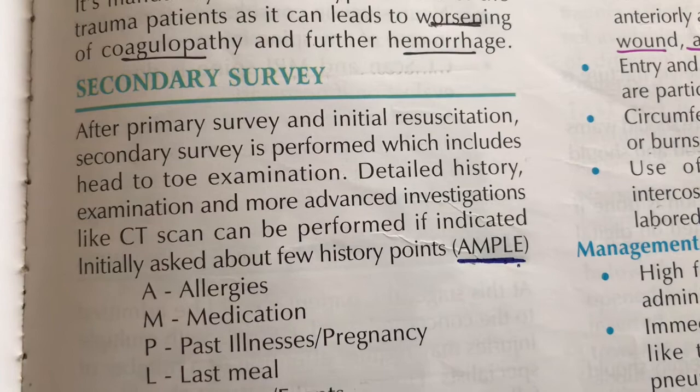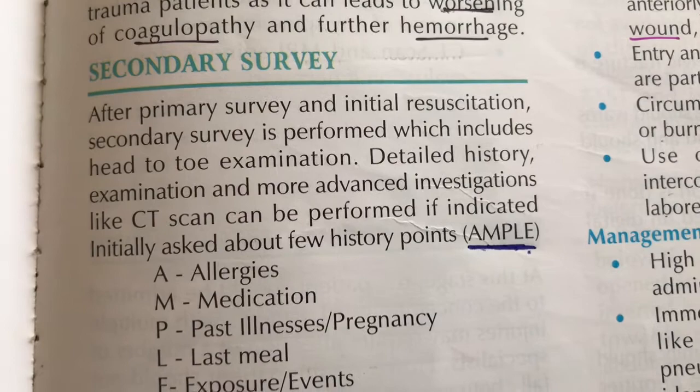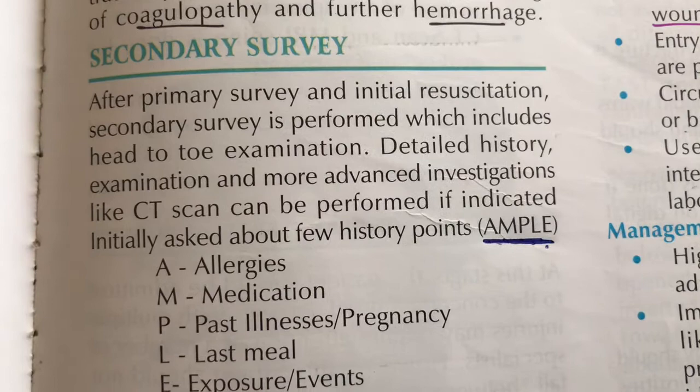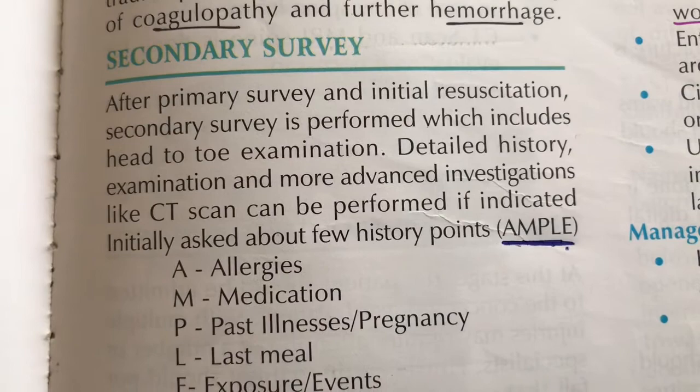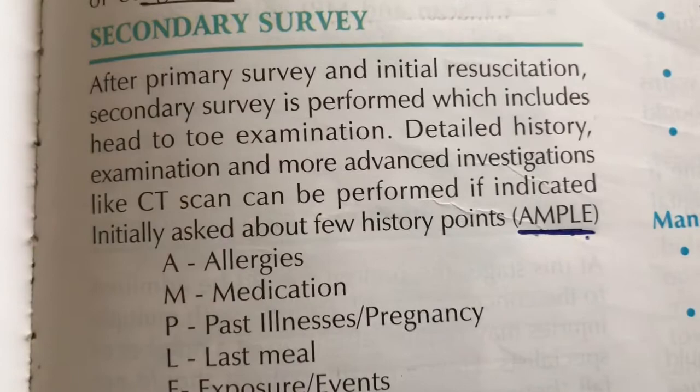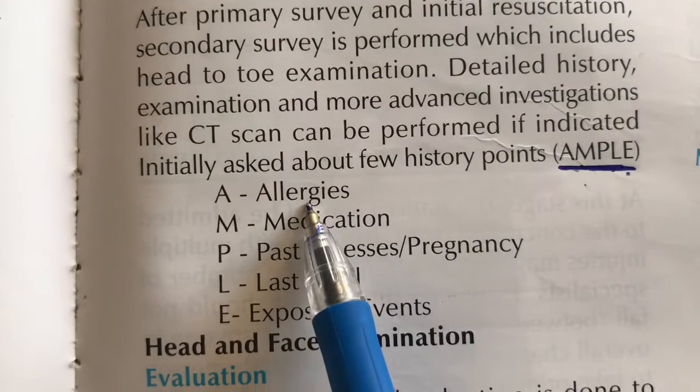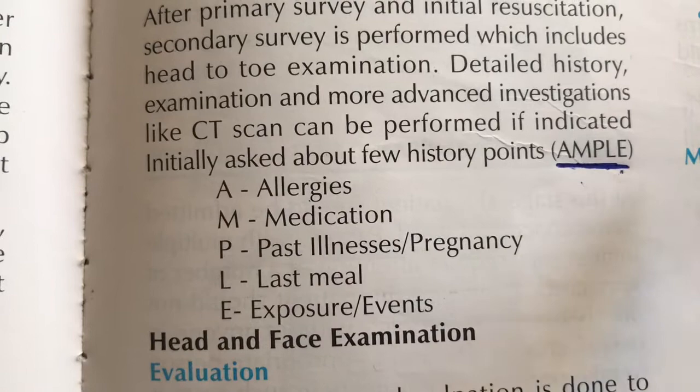After the primary survey, we proceed to the secondary survey, which involves a complete head-to-toe examination of the patient. We take a detailed history using the AMPLE mnemonic: A for Allergies, M for Medications, P for Past Illnesses, L for Last Meal, and E for Events and Mechanism of Injury.